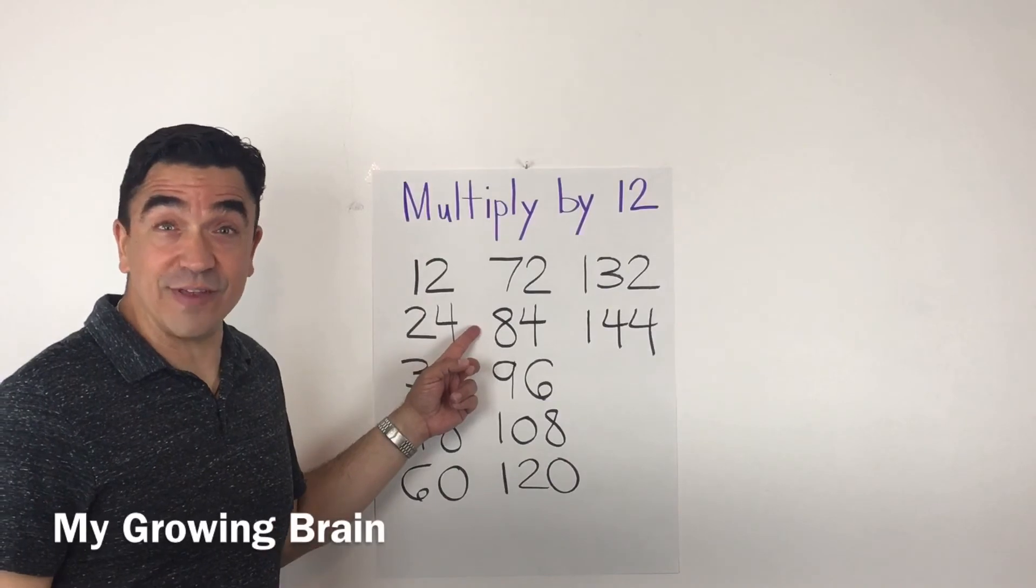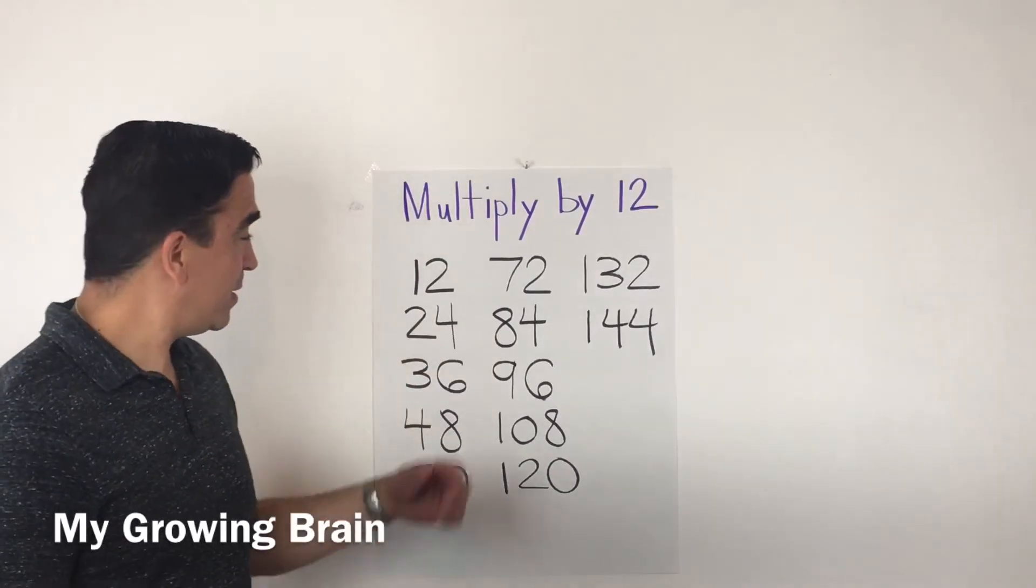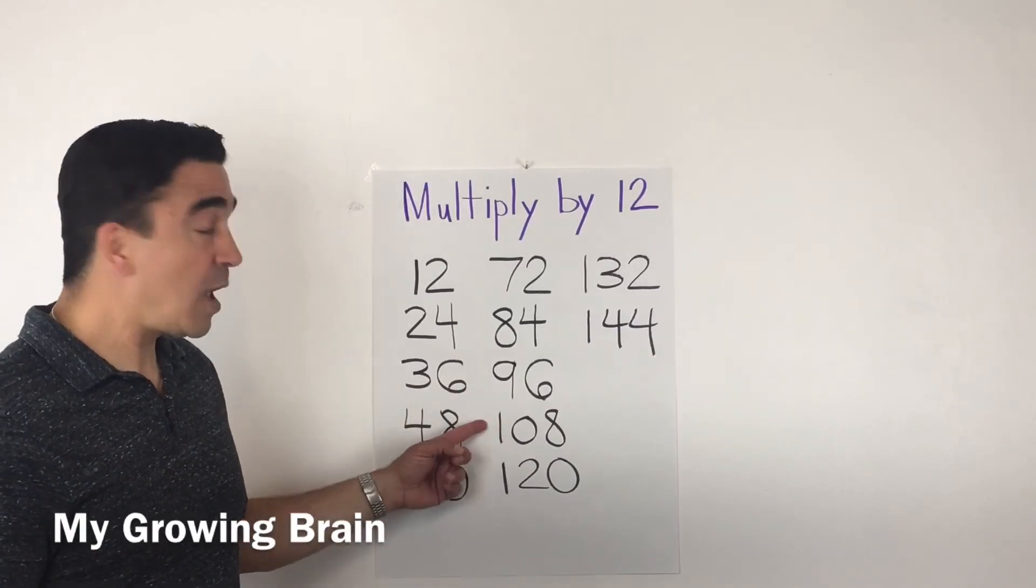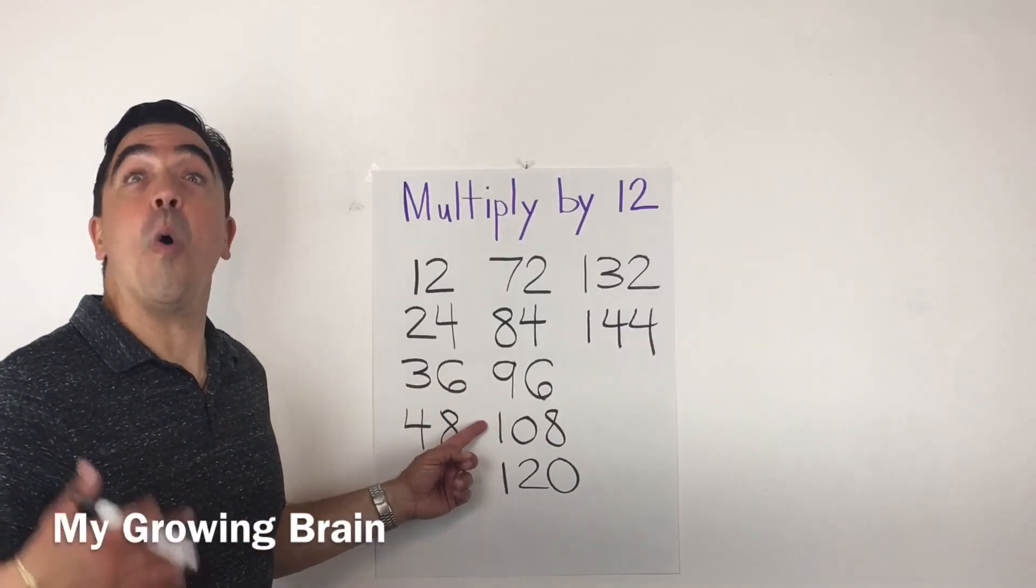12 times 7 is 84. 12 times 8 is 96. 12 times 9 is 108.